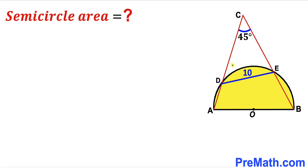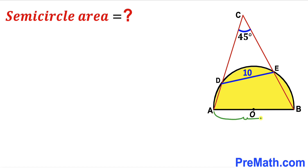Welcome to pre-math. In this video we have got this triangle ABC and this semicircle with the center O put together, such that this angle ACB is 45 degrees and this chord DE is 10 units. Furthermore, AB is the diameter of this semicircle. Our task is to calculate the area of this yellow shaded semicircle.